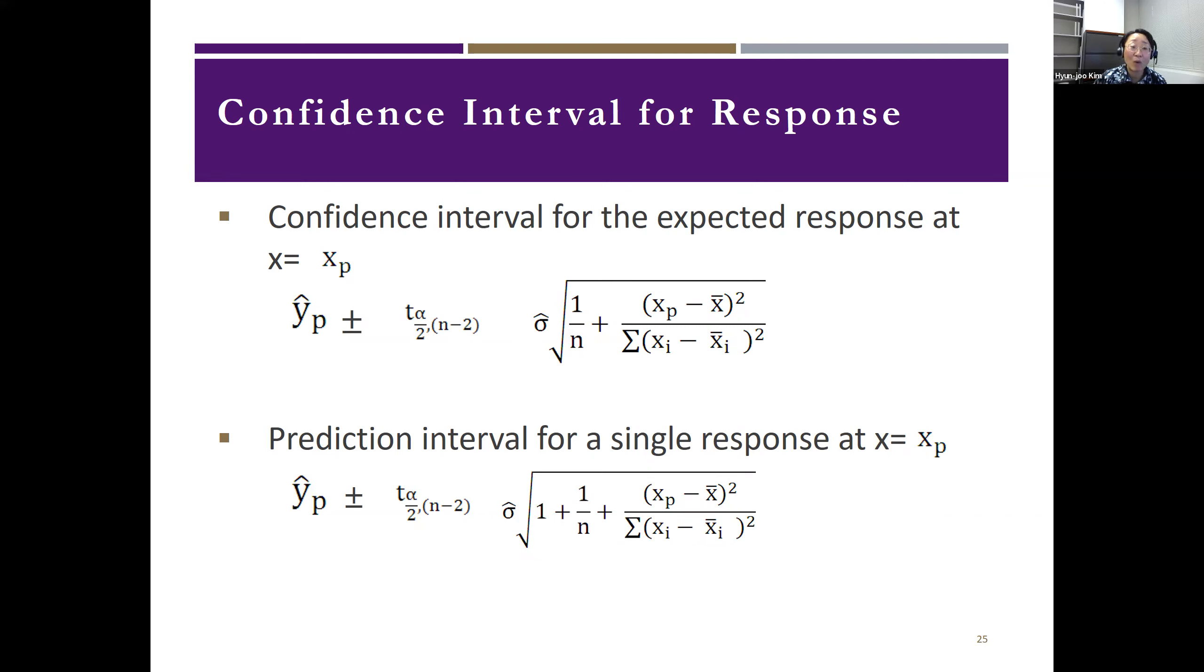Y hat depends on beta not hat and beta one hat, which follows normal distribution. Thus, y hat also follows normal distribution. With some math, which we skip here, confidence interval and prediction interval can be calculated using the following formula with t distribution.